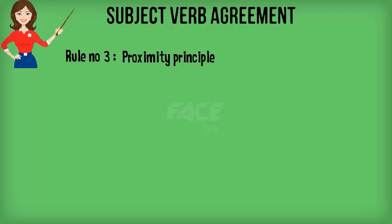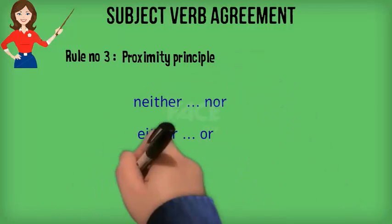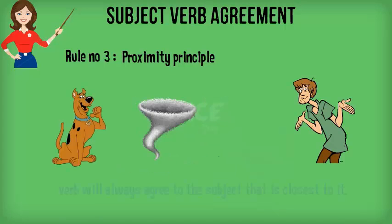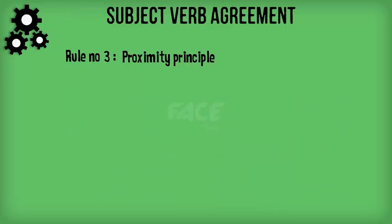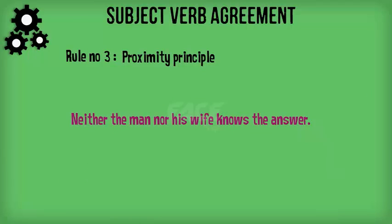Rule number three: the proximity principle. When subjects are joined by words such as 'neither/nor,' 'either/or,' 'not only/but also,' etc., the verb must agree with the subject that is closest to it. Example: 'Neither the man nor his wife knows the answer.' The subject closest to the verb is 'wife,' which is singular. Hence, a singular verb 'knows' is used.